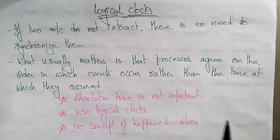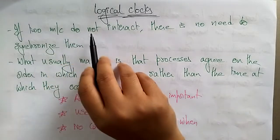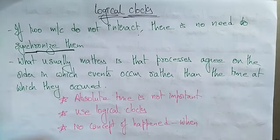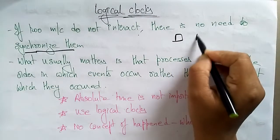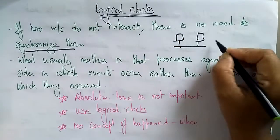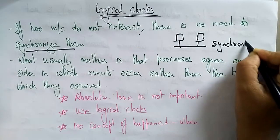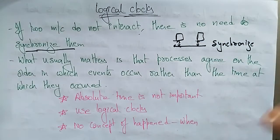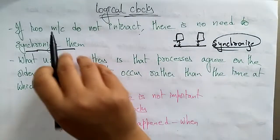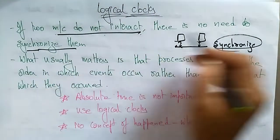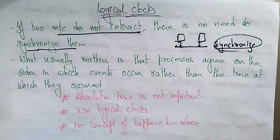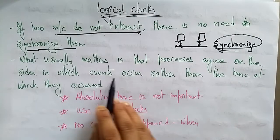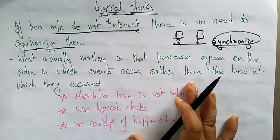So what is the logical clock? If two machines do not interact, there is no need to synchronize them. Whenever systems are placed in a network and they communicate with each other, synchronization plays a role. If two systems do not interact, there is no need to synchronize them. What usually matters is that the processes agree on the order in which events occur, rather than the time at which they occur.